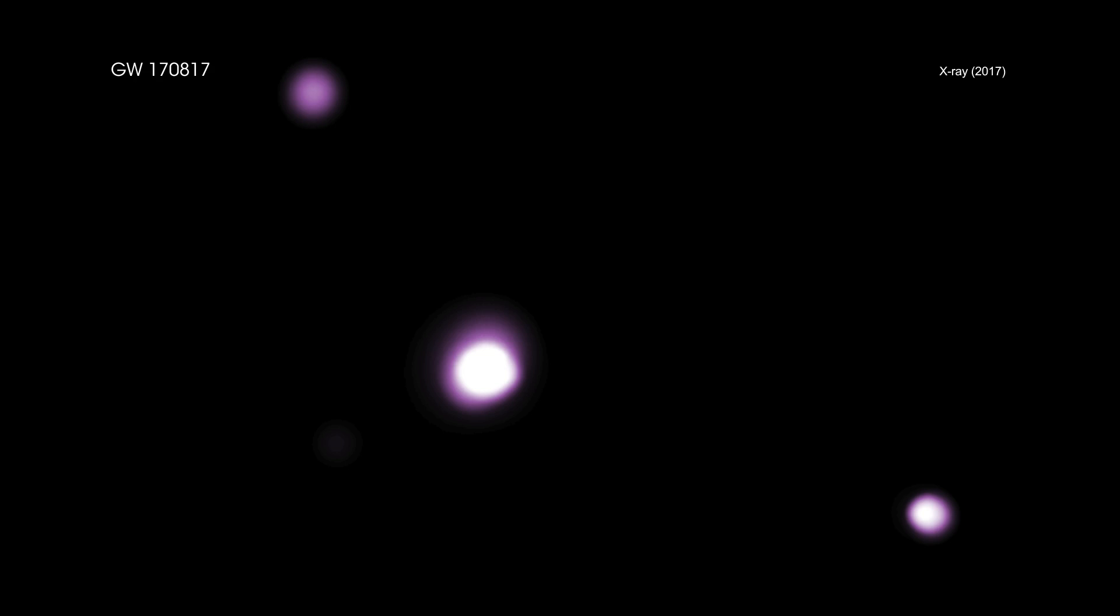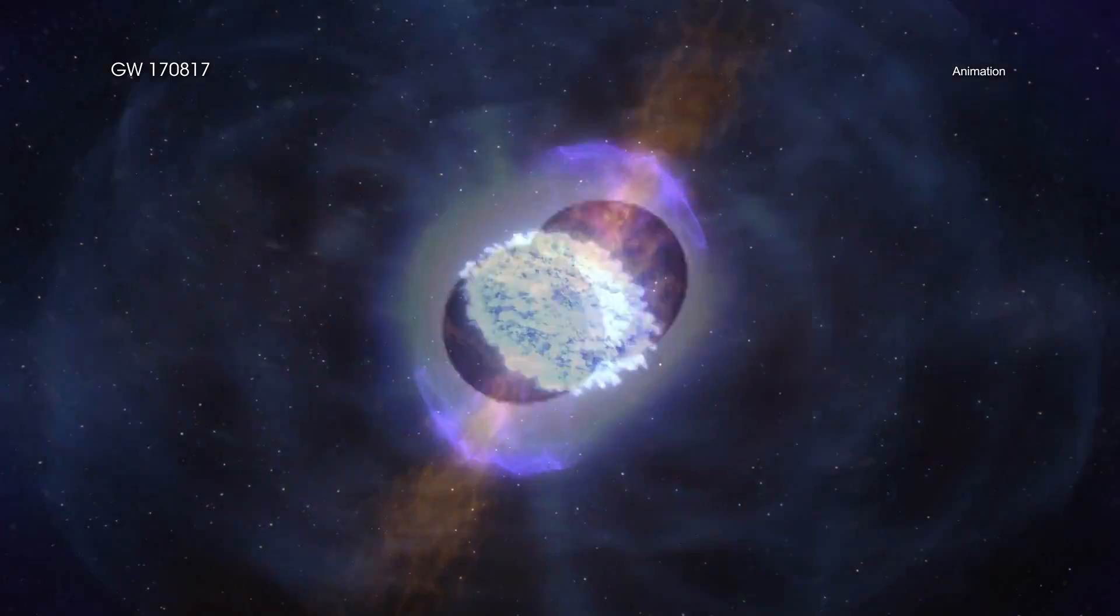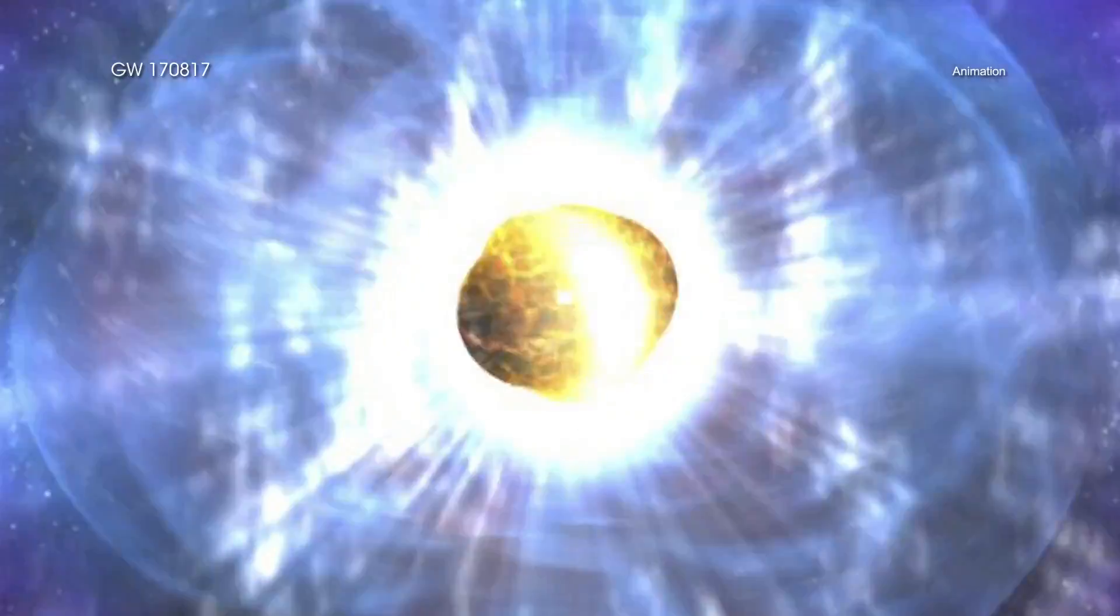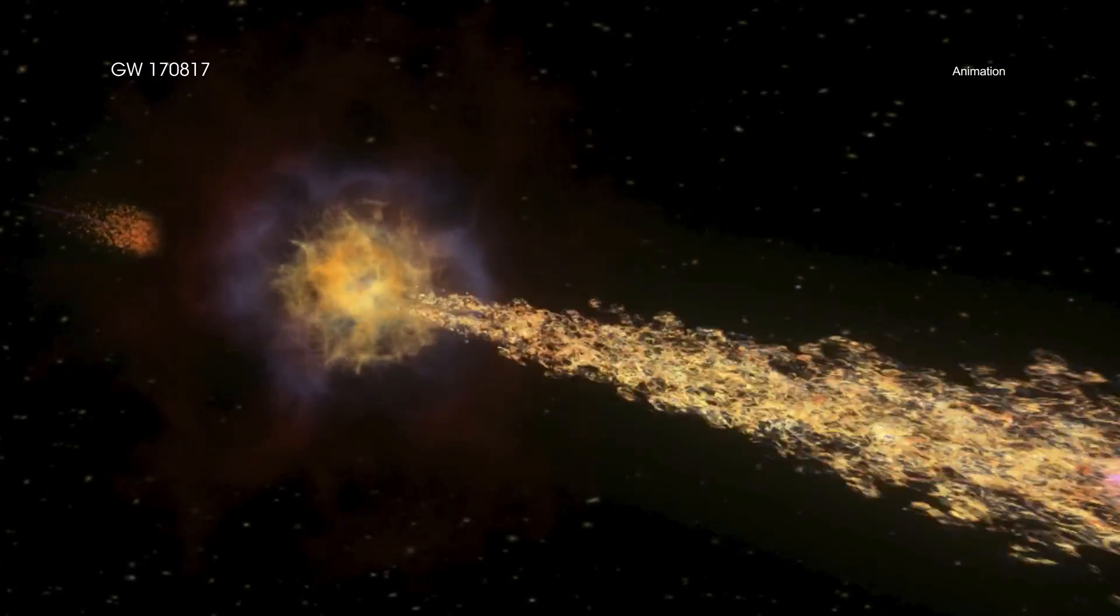This non-detection of X-rays quickly followed by a detection provides evidence for a narrow jet of high-energy particles produced by the neutron star merger. The jet is off-axis, that is, not pointing directly toward Earth.